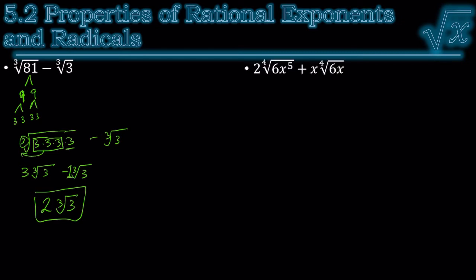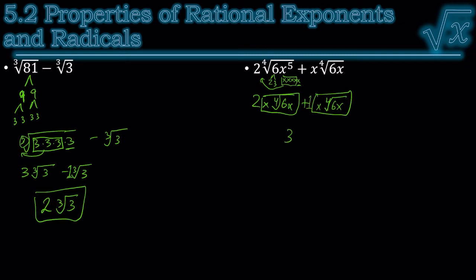Let's try another one — this time it's 4th roots. 6 is just 2 times 3; that's not 4 of anything. But x to the 5th is 5 x's. Notice 4 of those make a group, so I can bring that group out of the radical, and everything else stays — the 6 is still there and this other x is still there. I can't do the 4th root of 6, and it's just a single x. But notice I have 2 of these and I'm adding another one: which makes 3 of those.